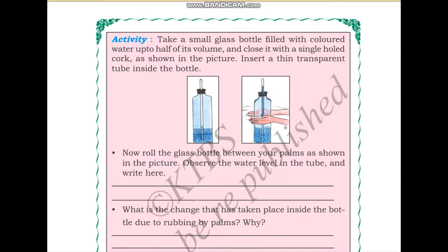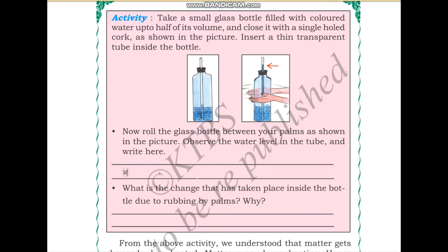Insert a thin transparent tube into the bottle. They are adding this thin transparent tube into the bottle. Now roll the glass between your palms as shown in the picture. Observe the water level in the tube and write it down. You will be able to notice that the water level in the tube rises.